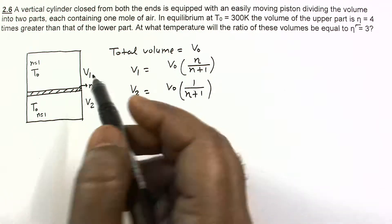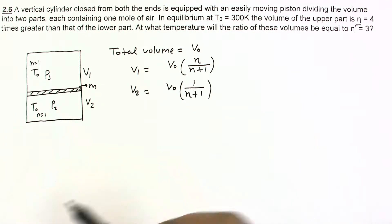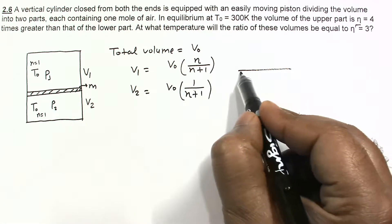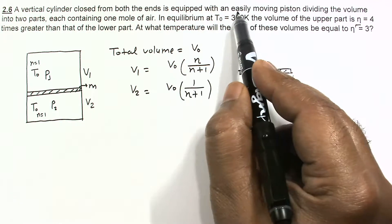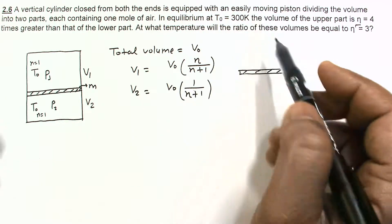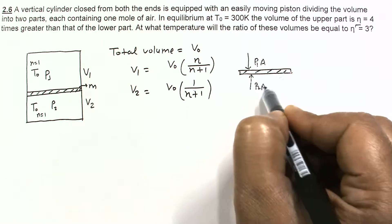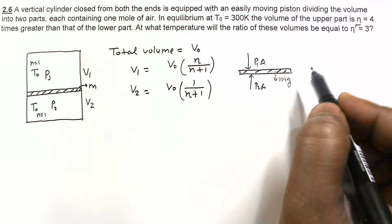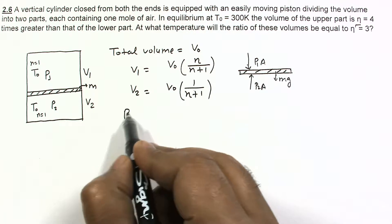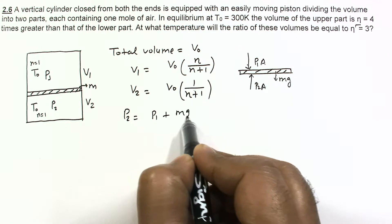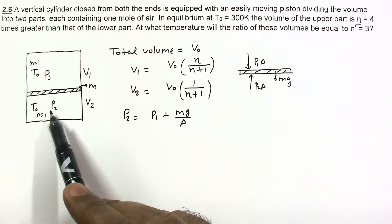The reason for the different pressures is the mass of the piston. Suppose the mass of the piston is m, P1 is the pressure in the upper chamber and P2 is the pressure in the lower chamber. From initial equilibrium, assuming no friction — since the piston is described as easily moving — the forces on the piston are P1·A downward, mg downward, and P2·A upward. For equilibrium, P2·A = P1·A + mg, so P2 = P1 + mg/A. Thus pressure in the lower part is higher and volume is lower.